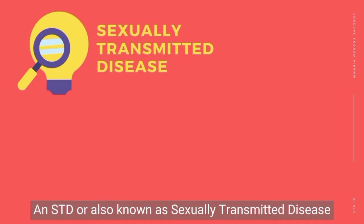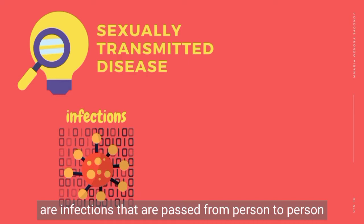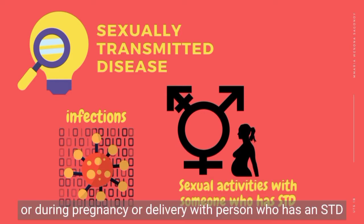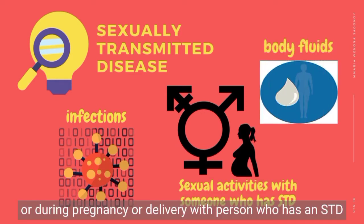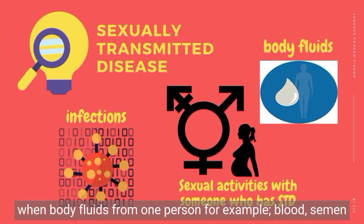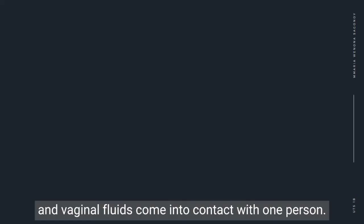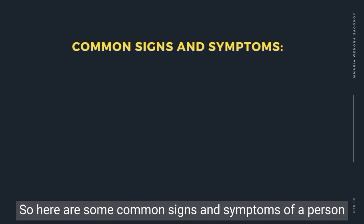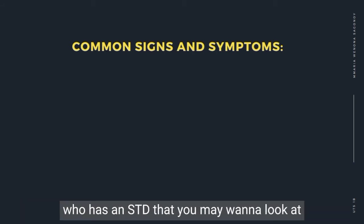So what is an STD? An STD, also known as a sexually transmitted disease or infection, is passed from person to person through sexual intercourse or other forms of sexual activity, or during pregnancy or delivery. A person has an STD when body fluids — for example, blood, semen, and vaginal fluids — come into contact with another person.